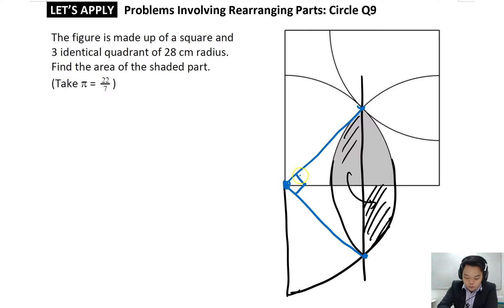So if we consider this little sector here, this blue sector, 90 degrees out of 360 degrees is 1 out of 4, which means that this is a quadrant.